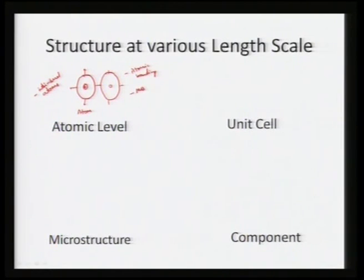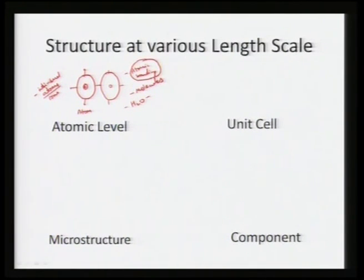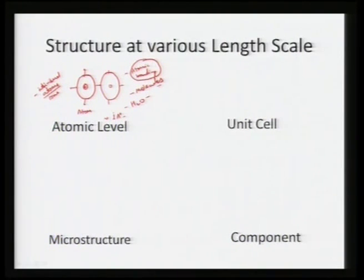We can have certain molecules like H₂O. So at the atomic scale we can have individual atoms, ions, certain bonds, or molecules such as H₂O. We are talking about a range of approximately 1 angstrom or so — that is the atomic level, roughly 1 angstrom to tens of angstroms.